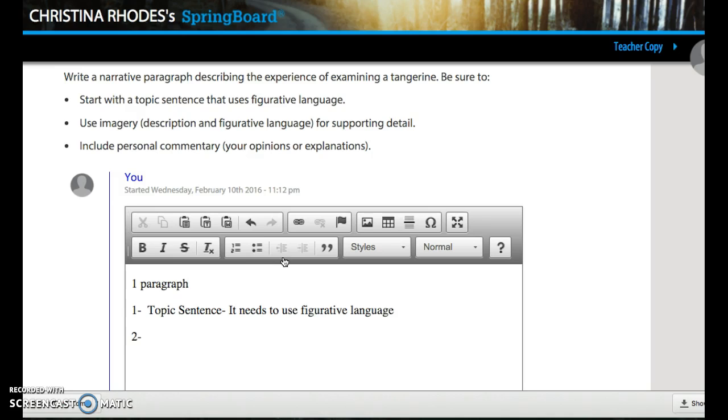The second sentence needs to use imagery. And you should have maybe two to three, four sentences using imagery. So you need sight, sound, taste, touch, and smell. You probably need three to four of these sentences describing that experience.